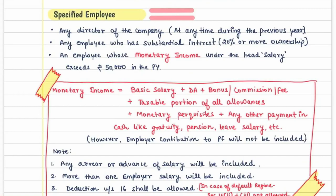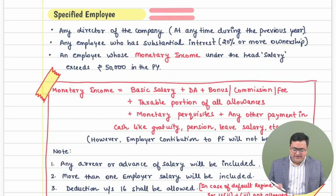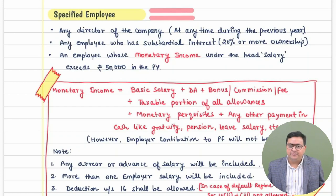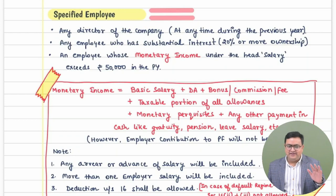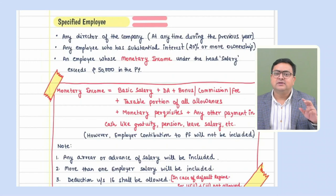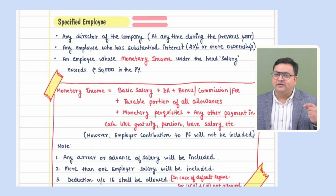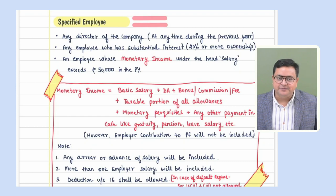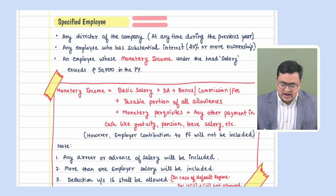Next is the concept of specified employee. There are five types of perquisites taxable only in the case of a specified employee: (1) motor car facility, (2) domestic servant facility (watchman, gardener, sweeper, cook, etc.), (3) utility bills (electricity, gas, water), (4) education facility, and (5) free or concessional tickets for employees working in the transportation industry. These five perquisites are taxable only for specified employees; for non-specified employees they remain exempt.